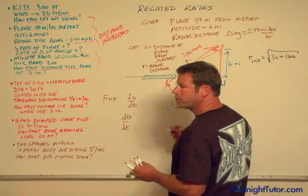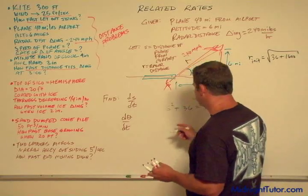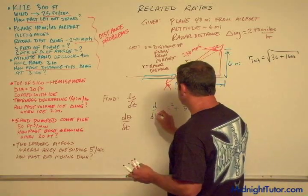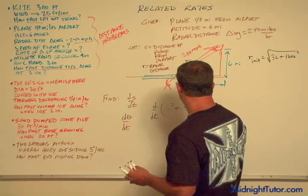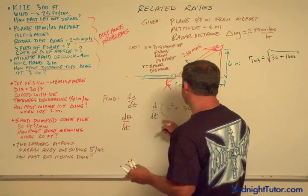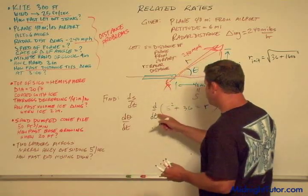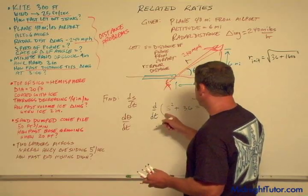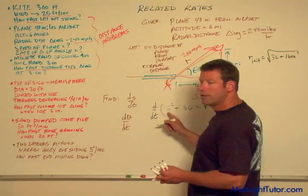I'll just do implicit differentiation, taking d/dt of S squared.